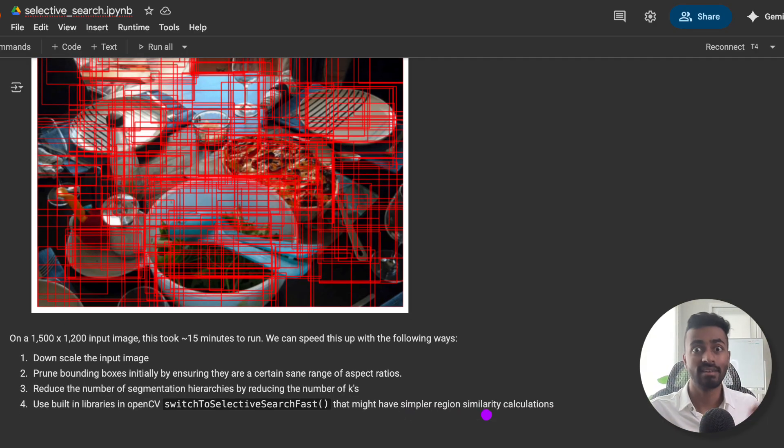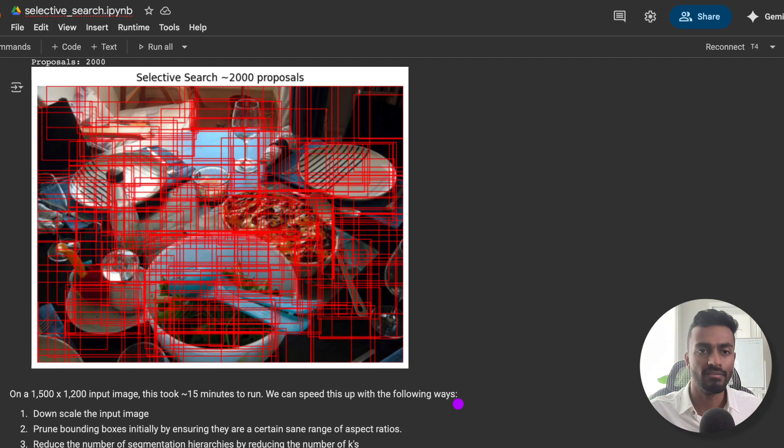The next we can do is also use some built-in OpenCV libraries that might have simpler region-based similarity calculations. So if we're calculating similarities when we're trying to merge different regions, it might be better to use more quickly computable heuristics, which is done in many of these OpenCV built-in sources. So I hope all of this and how we create these bounding boxes makes sense.